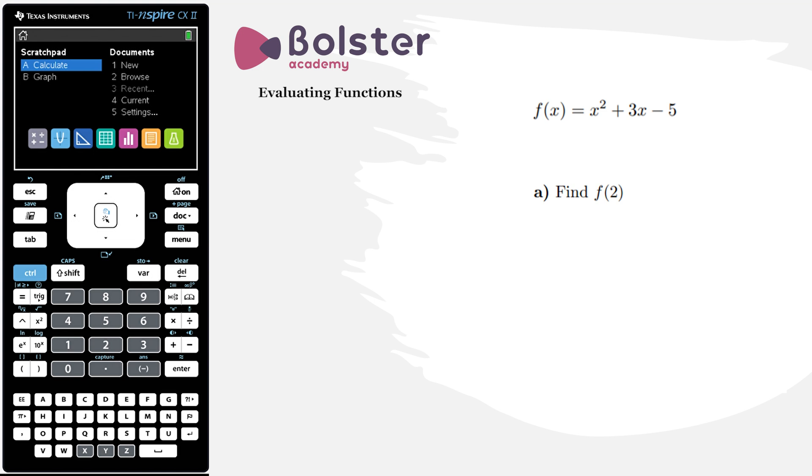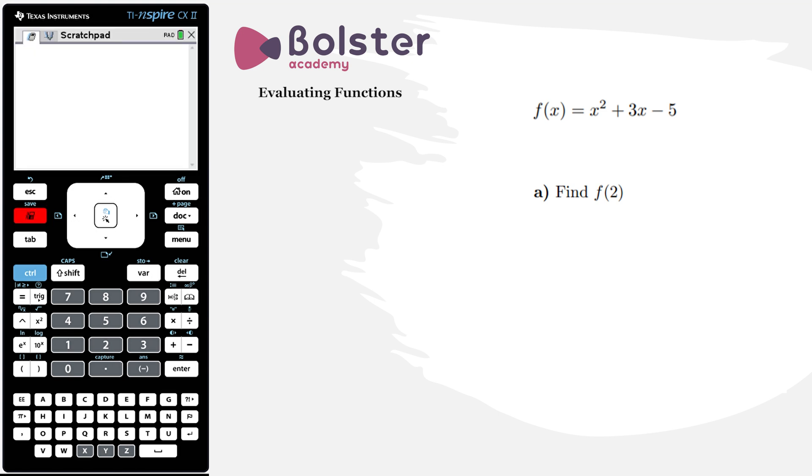Now the most obvious and straightforward way to do this is just substituting 2 for x everywhere it is in the function. So we can do that directly on our calculator in Scratchpad. I can just say instead of x², I'm now going to say 2² plus 3 times 2 minus 5. I hit enter and I get my answer 5. So that's telling me that f(2) is 5.